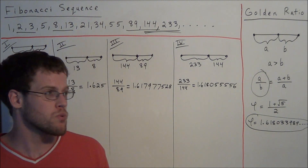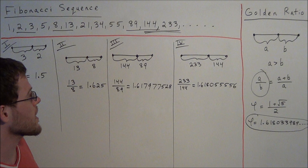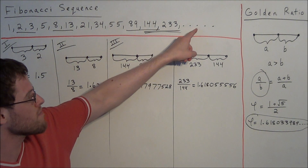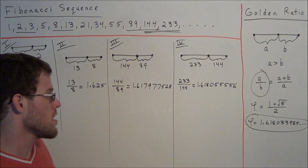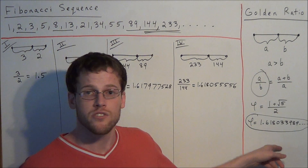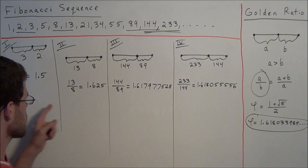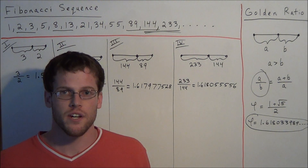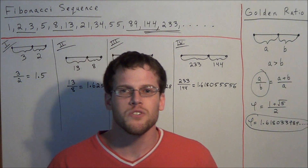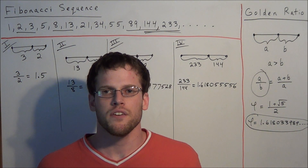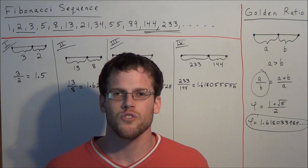The pattern — the connection between the Fibonacci numbers and the golden ratio — is this: as you look at the ratio of consecutive pairs of Fibonacci numbers, the further you go down the list, the closer that ratio gets to the golden ratio. This concludes the video on the connection between the Fibonacci numbers and the golden ratio. Thank you all for watching, and I hope this was enjoyable.